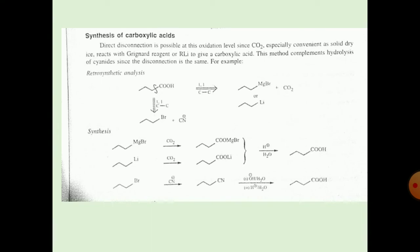The Grignard or lithium reagent plus CO2 is formed. In the synthesis of this carboxylic acid, the Grignard reagent reacts with CO2, forming C(=O)OMgBr. Simple hydrolysis gives the acid. Alternatively, alkyl lithium reacts with CO2 to form COOLi, and then H+ conditions give the carboxylic acid.